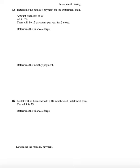This problem says find the monthly payment for the installment loan if the amount financed is $500 and it's a 5% APR loan and there's expected to be 12 payments per year for three years. When it comes to calculating the finance charge, there's a couple different methods we can use.